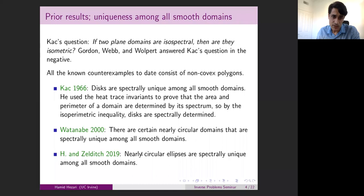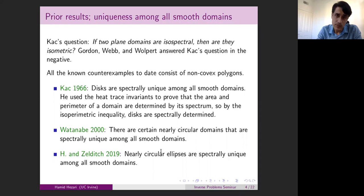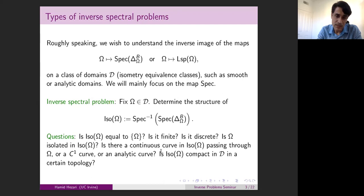There are some results by Watanabe; he also uses heat trace invariants and proves the existence of certain nearly circular domains that are spectrally unique among all smooth domains. These examples are non-explicit. Recently with Zelditch, we proved that nearly circular ellipses are spectrally unique among all smooth domains, and in this theorem we use some results of Avila, Kaloshin and Sorrentino in the field of billiard dynamics.